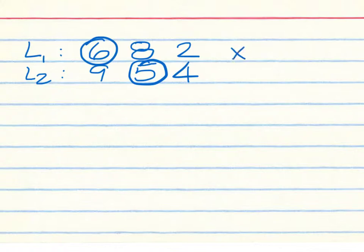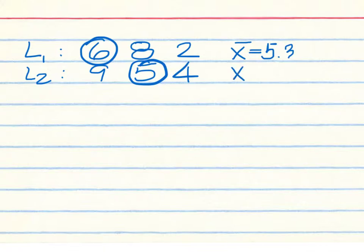Add them up: 6 plus 8 is 14, plus 2 is 16. 16 divided by 3, rounded to the tenths place, is 5.3 for the average. We'll go ahead and do the average for List 2 as well.